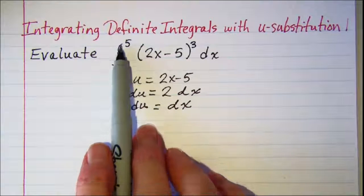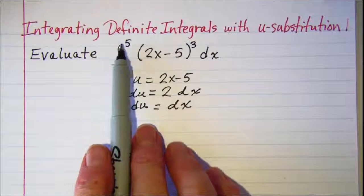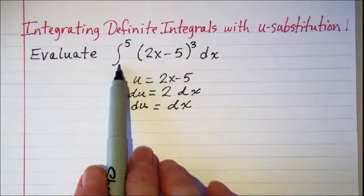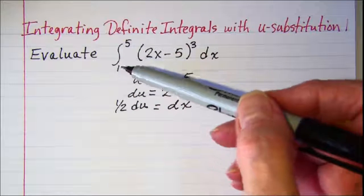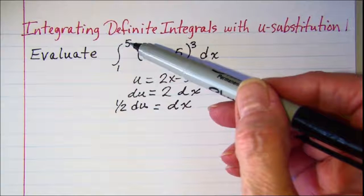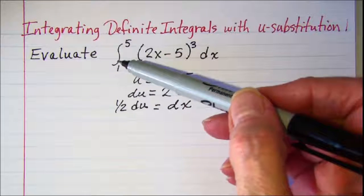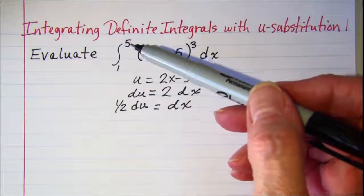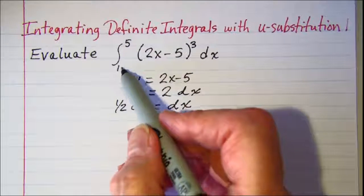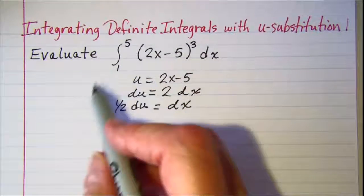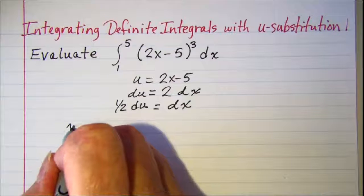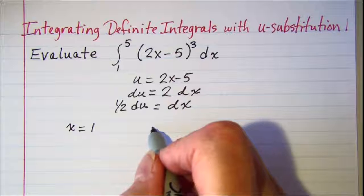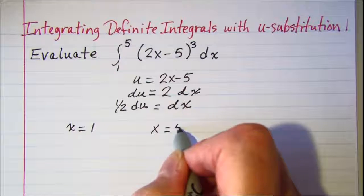The difference between integrating a definite integral and an indefinite integral is we're going to have to make substitutions in our lower limit of integration and our upper limit of integration. We can see that our lower limit is x equals 1 and our upper limit is x equals 5.